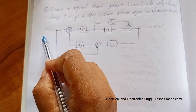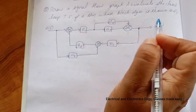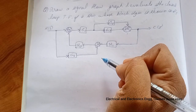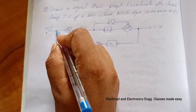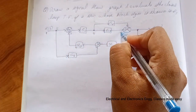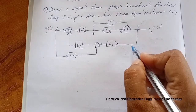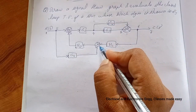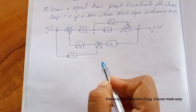First, we have to decide the nodes. Assume nodes at the input, output, at every summing point, and at every branch point. So node one is at the input, then node two, three, four, five at the summing point, six at the branch point, seven at the output, and eight at the next summing point. So there are eight nodes total, and we have to draw eight nodes first.